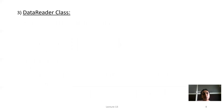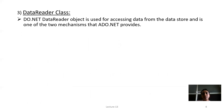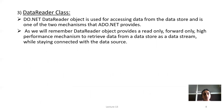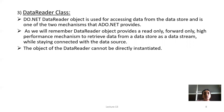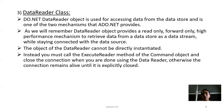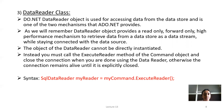Next is the data reader class. The .NET data reader object is used for accessing data from the data store and is one of the two mechanisms that ADO.NET provides. The data reader object provides a read-only, forward-only, high-performance mechanism to retrieve data from a data store as a data stream while staying connected with the data source. Data reader is the only object that can be used in connected data access. The object of data reader cannot be directly instantiated — instead, you must call the ExecuteReader method of the command object and close the connection when you are done using the data reader; otherwise, the connection remains alive until explicitly closed.